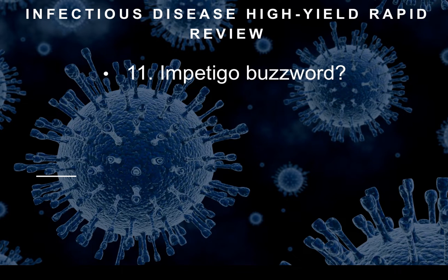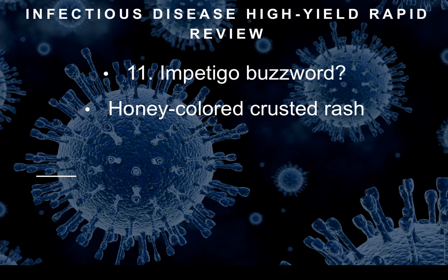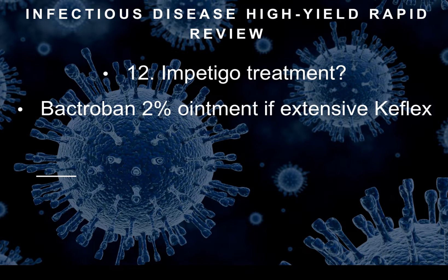What is impetigo? Buzzwords: if you hear 'honey-colored crusted rash on a kid's face,' you should be thinking impetigo. How do we treat it? We treat it with Bactroban 2% ointment, and if it's extensive we're going to treat it with Keflex. So if the stem says tried Bactroban, didn't work, now it's super extensive — the answer is Keflex.